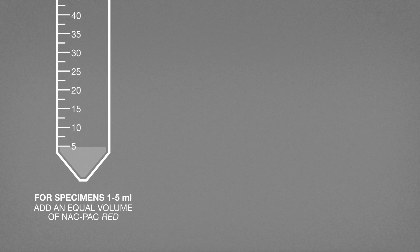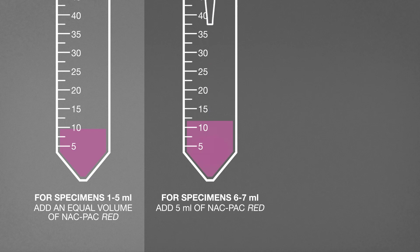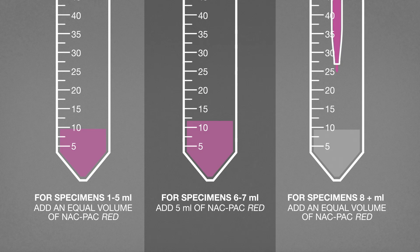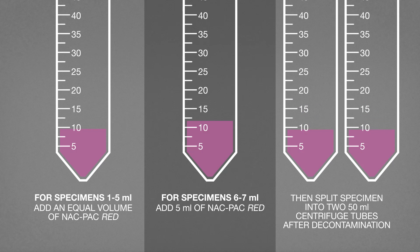For specimens 1 to 5 ml, add an equal volume of NACPAC Red. For specimens 6 to 7 ml, add 5 ml of NACPAC Red. For specimens 8 ml or greater, add an equal volume of NACPAC Red and split the specimen into two 50 ml centrifuge tubes after decontamination. These volumes must be measured precisely.